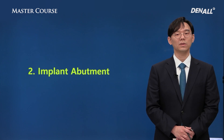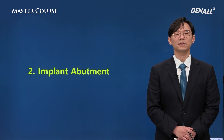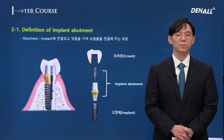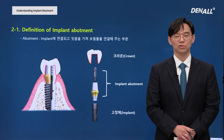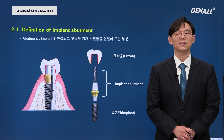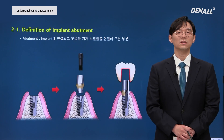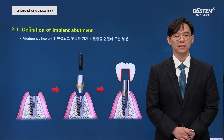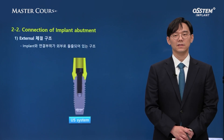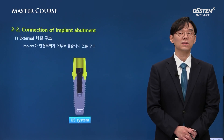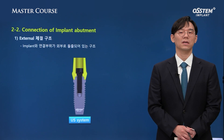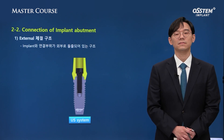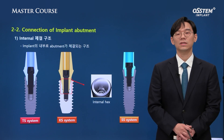Let's talk about implant abutments. The abutment is the middle part which connects the implant and prosthesis. It is connected with an abutment screw, and on top, the crown is cemented. As for the interface between implant and abutment, for external connection it is outside of the implant, and for internal connection it is within the implant.